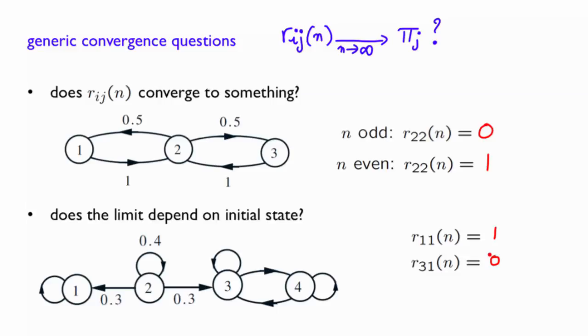Finally, let us calculate R21 of n for large n. So you start in state 2 and you ask yourself what is the probability that I will end up in state 1 after n steps for n large?